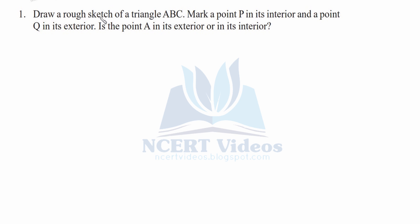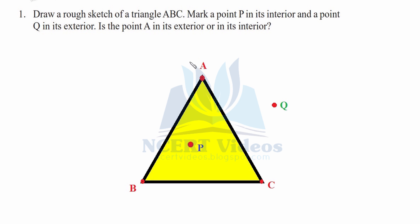Question one: draw a rough sketch of a triangle ABC, mark a point B in the interior and a point Q in the exterior. Here we have constructed a triangle with points A, B, and C. We mark B in the interior of triangle ABC, and then draw Q outside the triangle in its exterior.